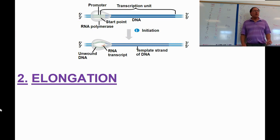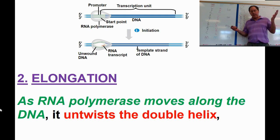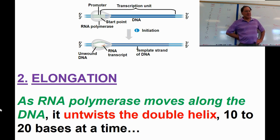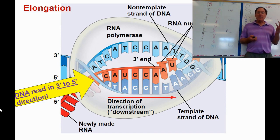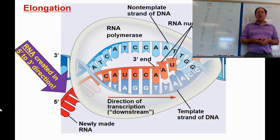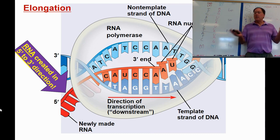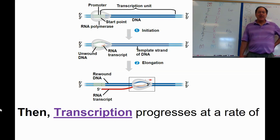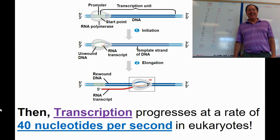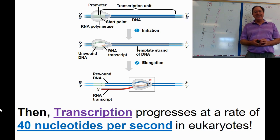During elongation, transcription progresses at a rate of about 40 nucleotides per second. New RNA nucleotides are added as the RNA polymerase moves along the DNA, unwinding it and breaking it 10 to 20 bases at a time. DNA is read in a 3' to 5' direction because we have to make RNA in a 5' to 3' direction. You can see on this picture how new RNA nucleotides are being added to the 3' prime end, and then the DNA closes right back up, keeping all the information protected.